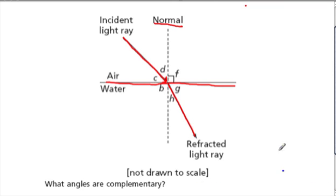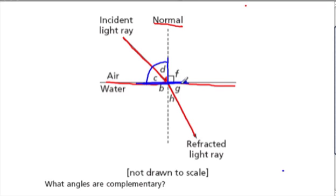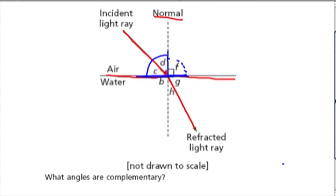This is almost exactly like a previous problem. There's a lot going on here to confuse us. Angle F — if you see a question asking for a complementary angle, look for that other 90 degree angle in the picture. It's right here. Angle F adds up to 90 degrees. If I go along this air-water line, D and C together have to also add up to 90 degrees because that's a straight line — 180 degrees. 90 of it is taken up by F, so the other 90 has to be taken up by D and C. So they're complementary to each other.